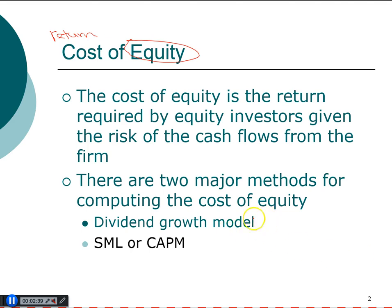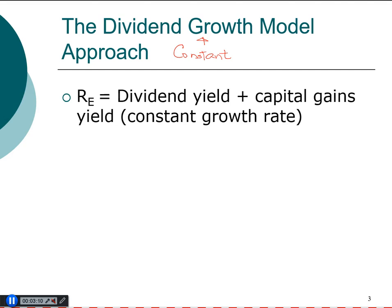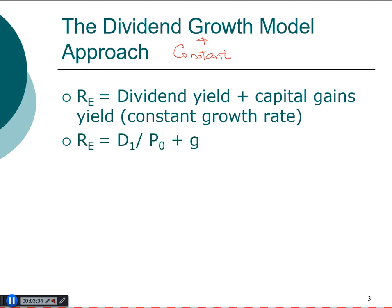When can we use one model versus the other? The dividend growth model is the constant dividend growth model. To use this approach, the company must have constant growth. If it does, the required return is the sum of dividend yield plus capital gains yield. Under constant growth, the capital gains yield equals the constant growth rate, so the formula becomes: dividend in year one divided by today's price, plus the constant growth rate.